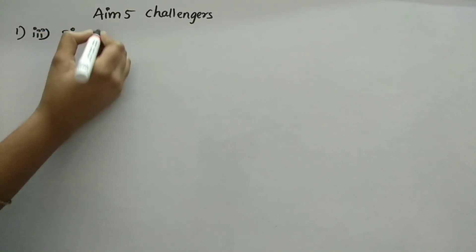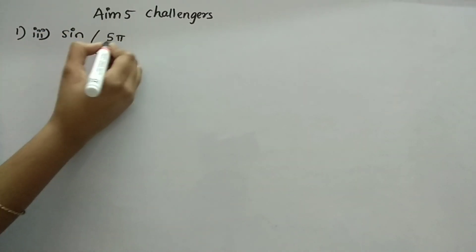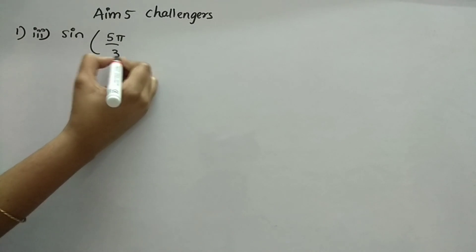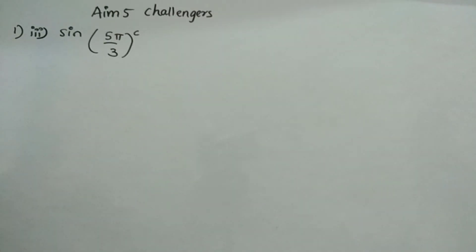Now, we will see third one. Third bit is sine 5 pi by 3. That is the degree. It's like value. Unit, I can say.